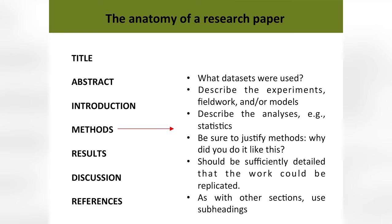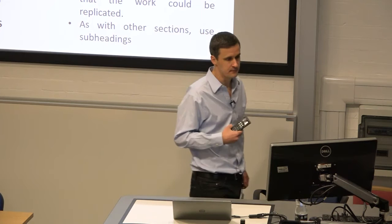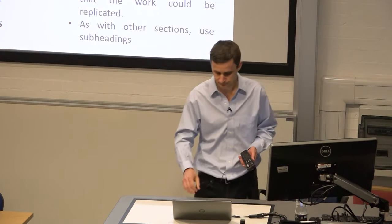The methods section is factual, straightforward, concise statements of how you did the research — how you addressed those questions and hypotheses that you set up in your introduction. So: what data sets were used? Describe the experiments, the fieldwork, the models, the analyses. What statistics did you use? Throughout all of this, you want to be justifying your methods — be very clear about why you've done it like that, what are the pros and cons, why have you chosen this method and not a different one. It should always be sufficiently detailed that the work could be replicated. Use subheadings to set out what the data were, what the models were, what the analyses were.